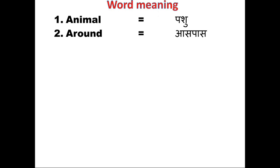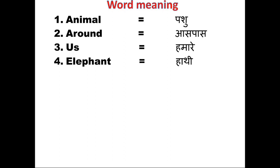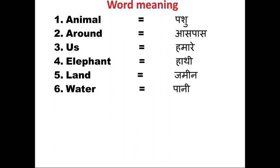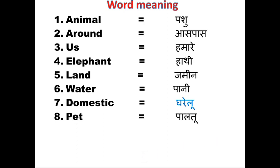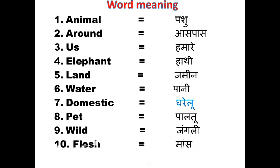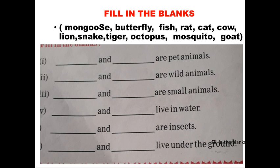Now we will do word meanings. Elephant — E-L-E-P-H-A-N-T, Hathi. Land — L-A-N-D, Zameen. Water — W-A-T-E-R, Paani. Domestic — D-O-M-E-S-T-I-C. Pet — P-E-T, Paltu. Wild — W-I-L-D, Jungle. Flesh — F-L-E-S-H, Maas.